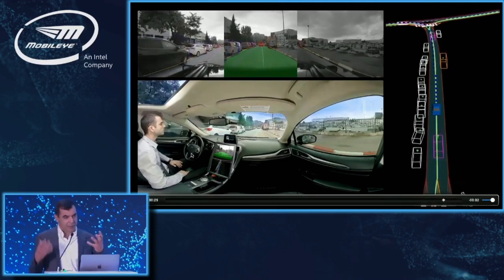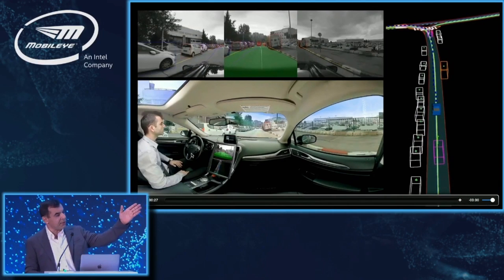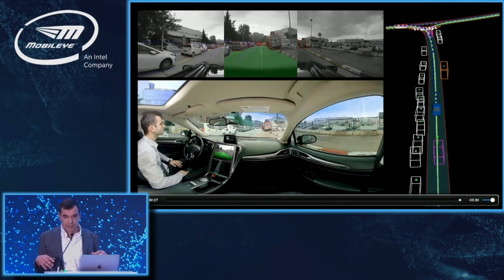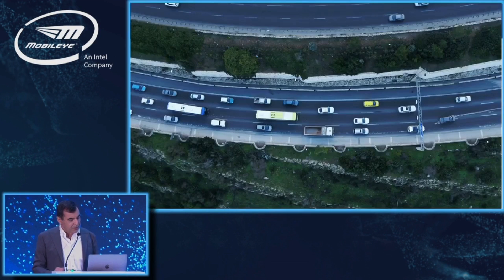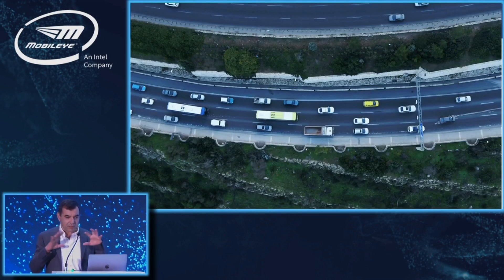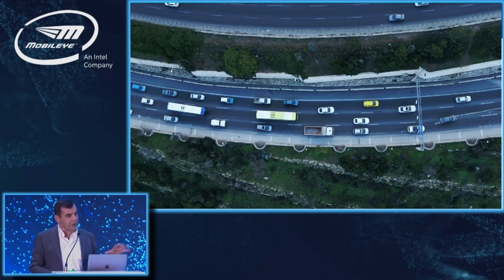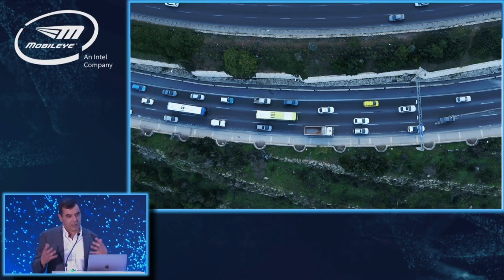All of this is done by cameras. When I mention 3D, the right-hand side is a 3D display — everything is located in 3D — and you need to be able to do this only with cameras. All the examples I'm showing are from this 12-camera system; there's no other sensor in the car. I'll also show how things look from a drone perspective so you can see the agility.